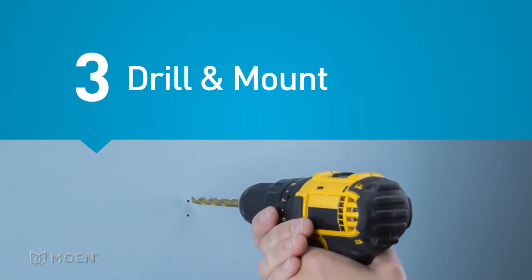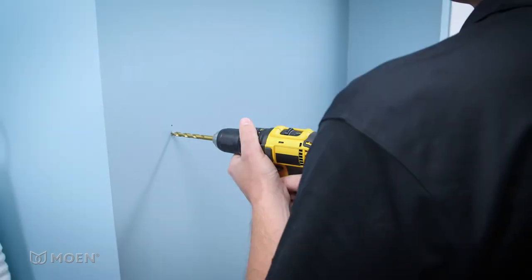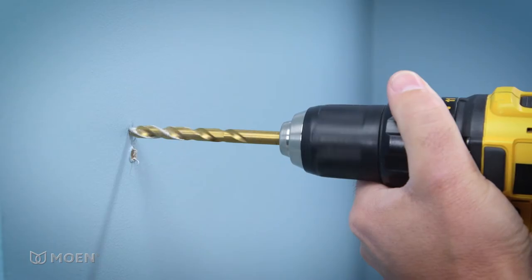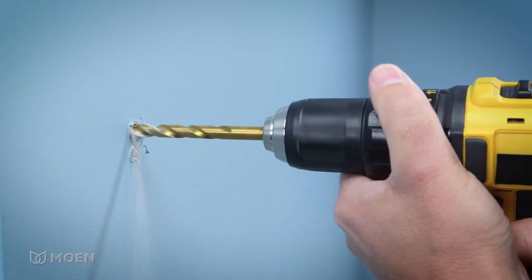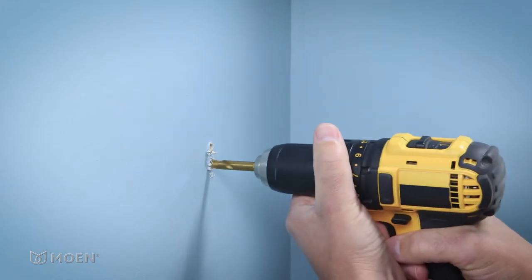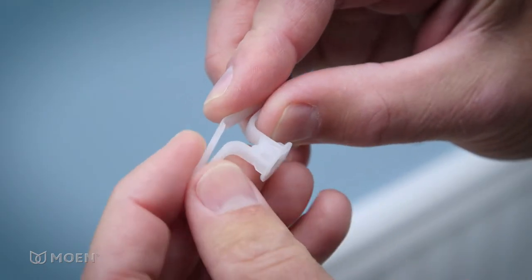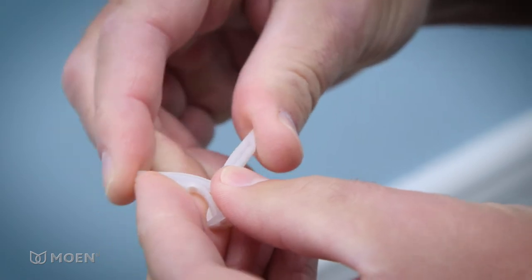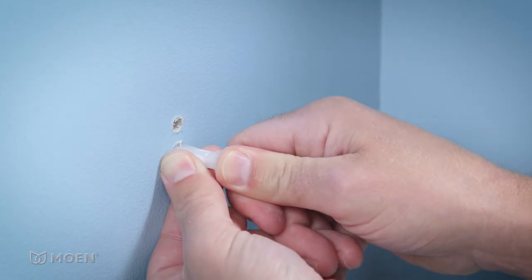Step 3: Drill and Mount. Drill four 5-16-inch holes at the marked ink stamp locations. Fold the ends of each anchor together and insert them into the holes.